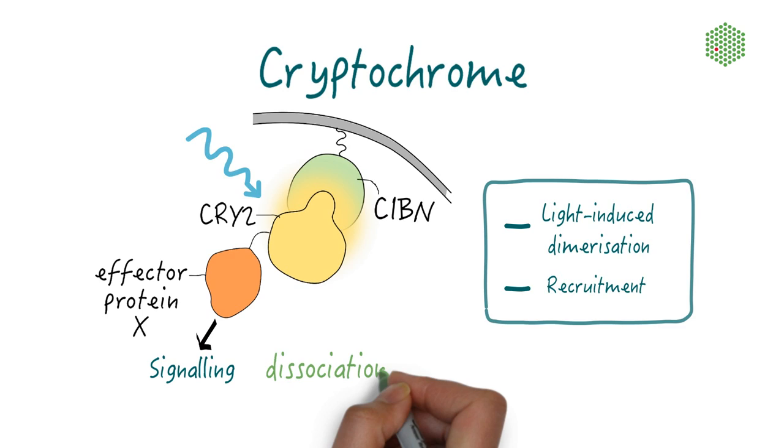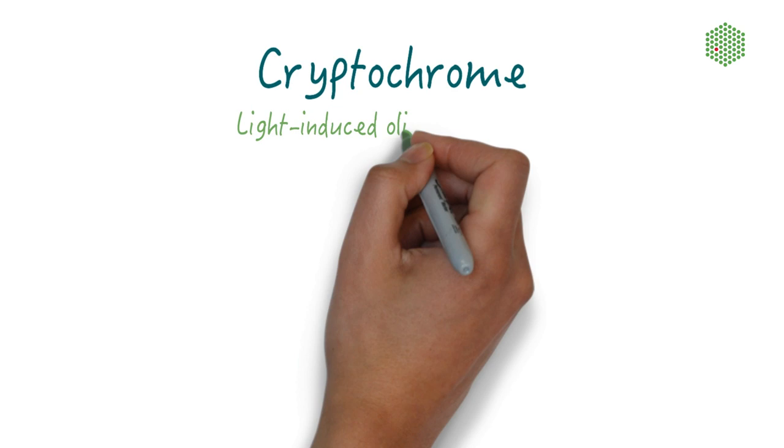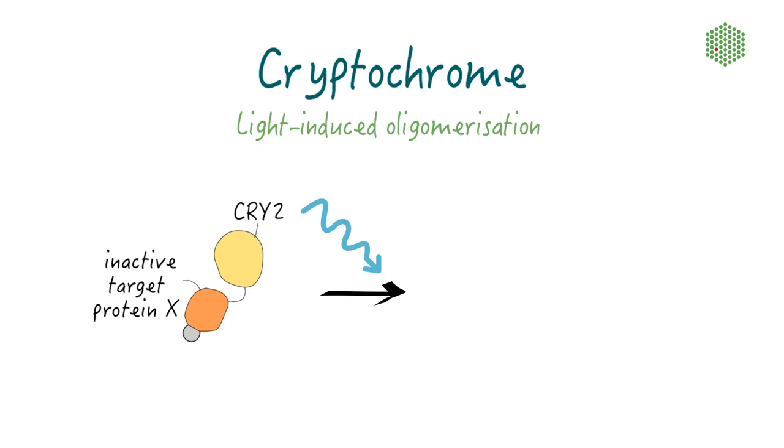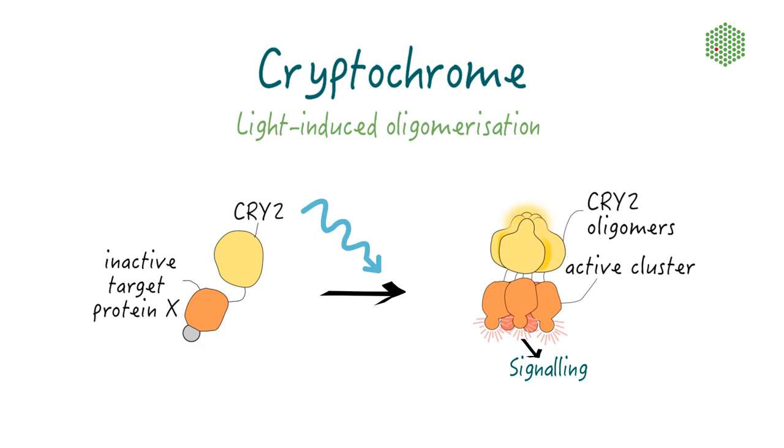The dissociation time of this assembled complex in the light is between five and ten minutes. When Cry2 is present alone, it forms homo-oligomers upon blue light illumination, which are reversible in the dark. Special Cry2 mutants are more likely to form homo-oligomeric clusters and can be used to focally enrich target proteins and to activate signaling of enzymes whose activity depends on protein density.